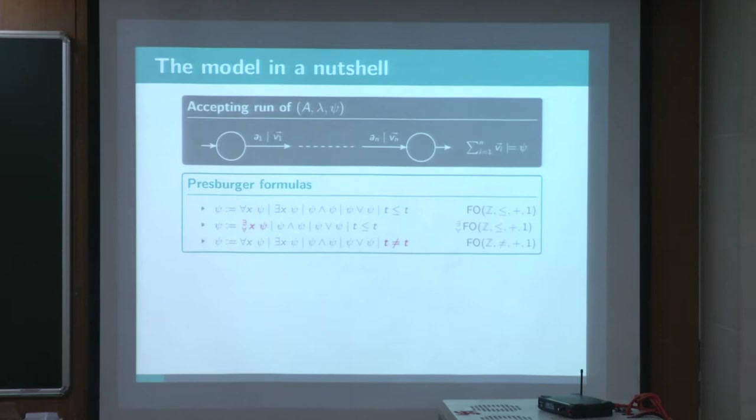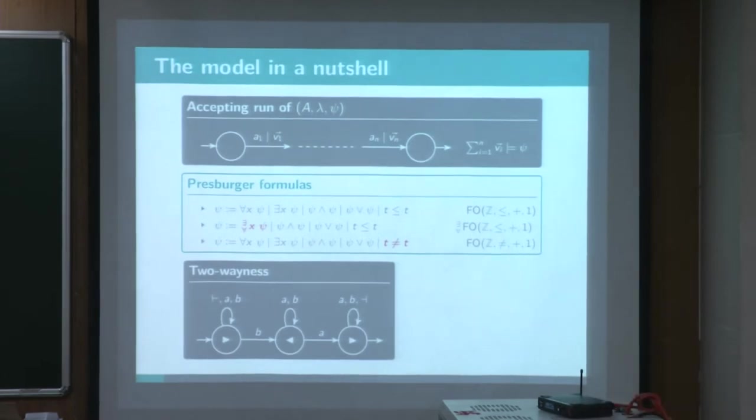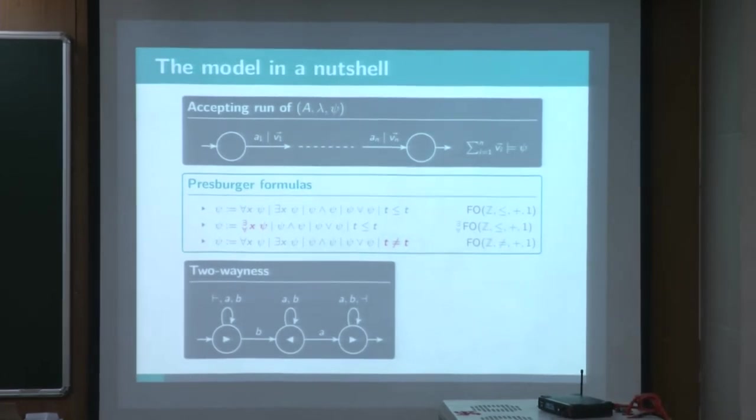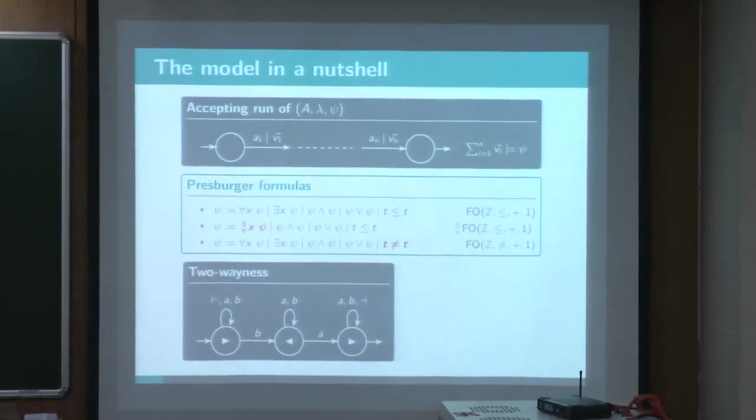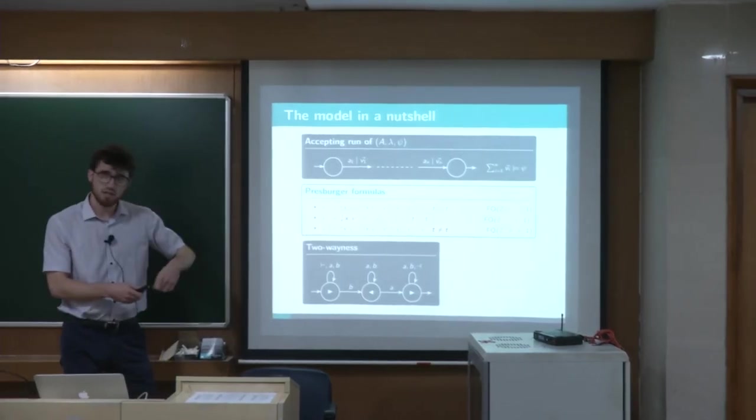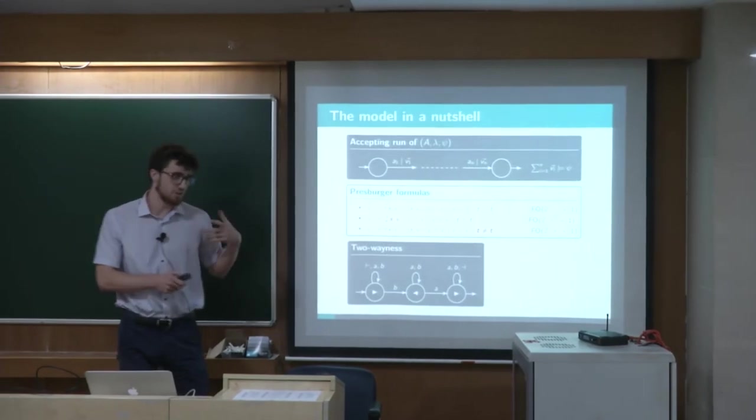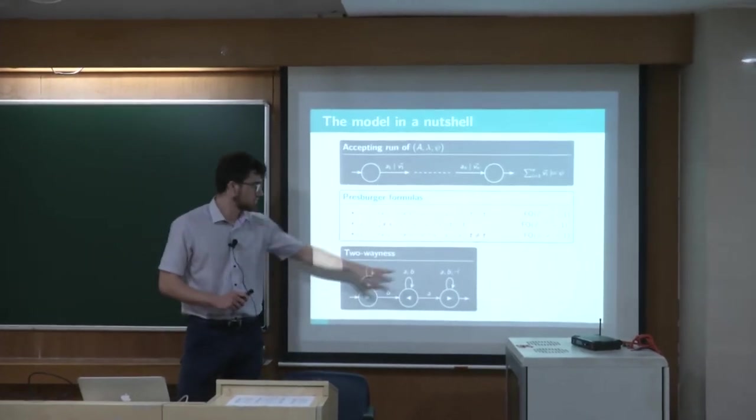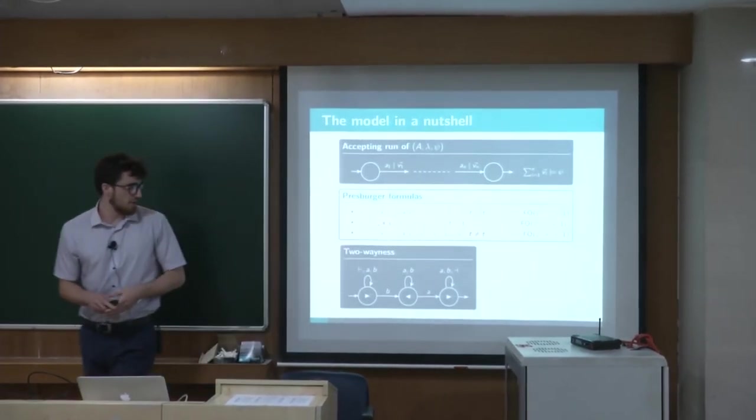And finally there is this notion of two-wayness. So this two-wayness can be seen basically as a partition of the states. Some states read the input forwards, and some other states read it backwards, and the automaton does not go beyond the words thanks to those begin and end markers.